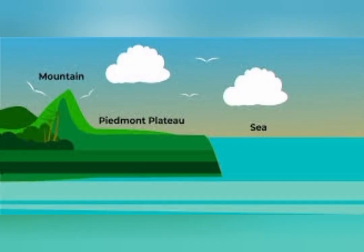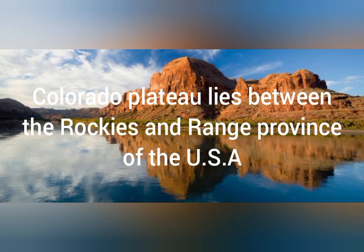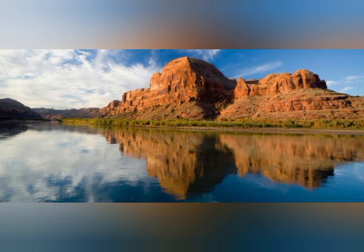The second type of plateaus are the pediment or border plateaus. These lie between mountain ranges on one side and plains or sea on the other side. An example is the Colorado Plateau, which lies between the Rockies and the range province of the USA.